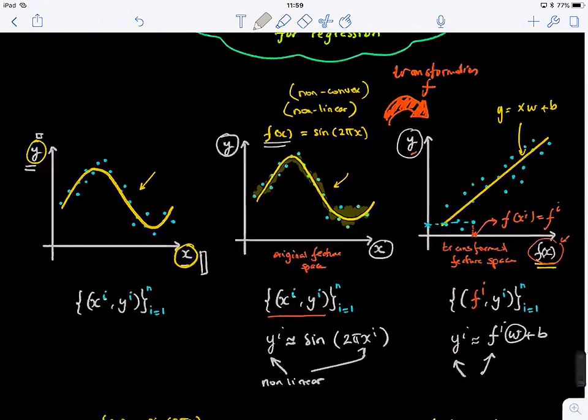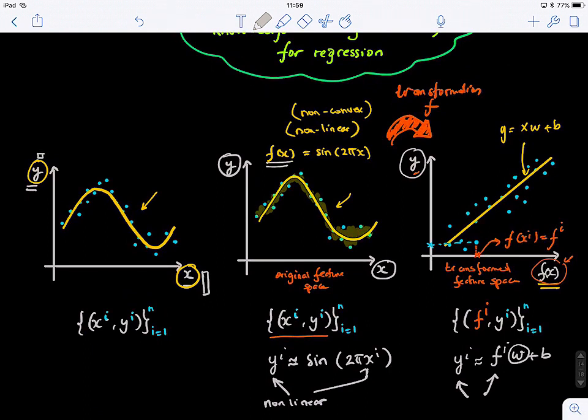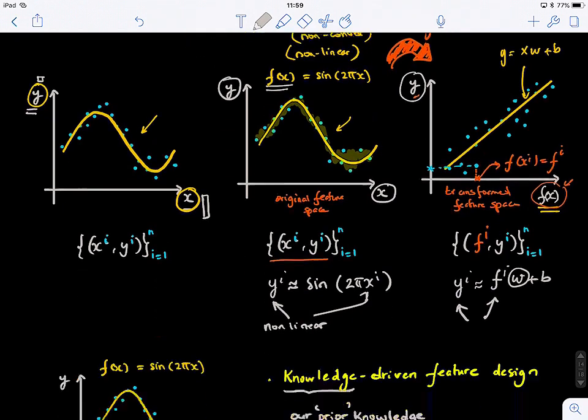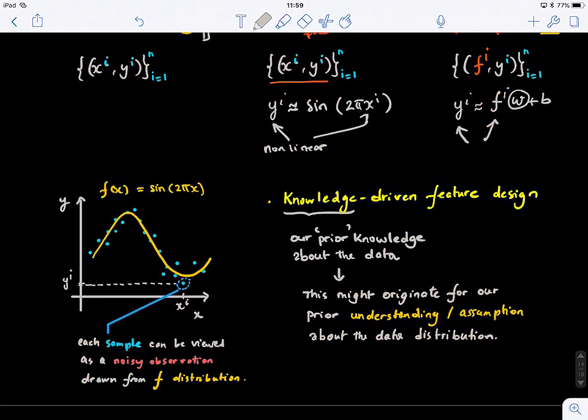So this is what we call a trick, like, we call it the kernel trick, so we will learn more about how to transform the data later on when we were doing kernel SVMs. But what I would like you guys to keep in mind, that sometimes when you have a null, if it happens that you know what is the function that generates or approximately nicely approximates the relationship between your inputs and your outputs, then if you use this function to create a new space, then you can solve the regression problem linearly. So here, this is what we call a knowledge-driven feature design, because we have a prior knowledge about the data. So we say that this might originate from our prior knowledge or assumption about the data distribution.